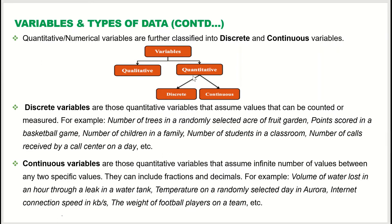Continuous variables are quantitative variables that assume an infinite number of values between any two specific values. For example, if temperature today is 23.7 and the next day is 24.8, the temperature can take all decimal values in between. Similarly, the volume of water lost in an hour through a leak in a tank can be 1.0, 1.1, 1.2, 1.3 — it takes all decimal values — so that is an example of a continuous variable.